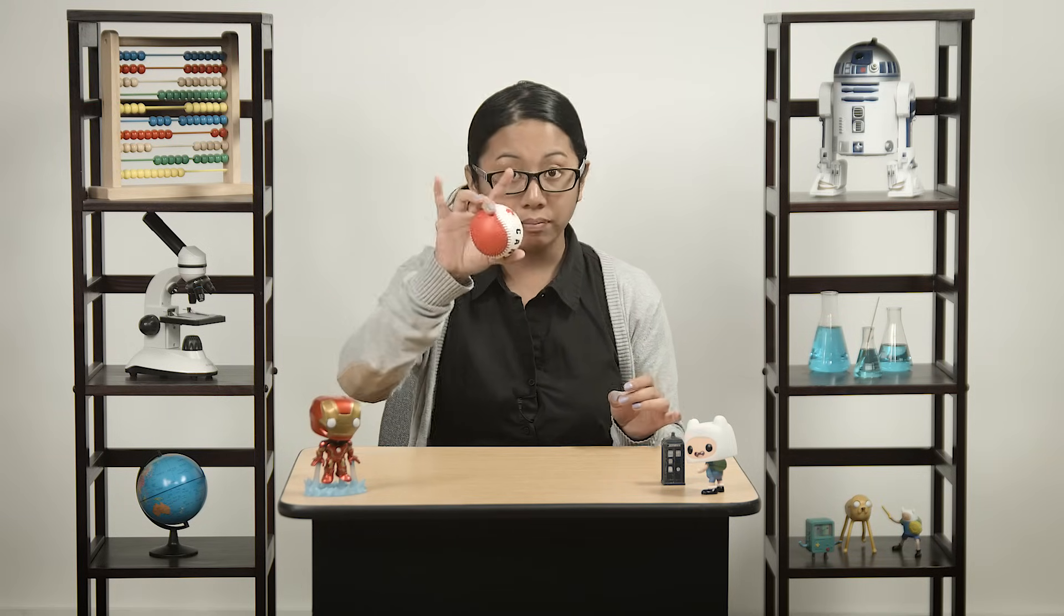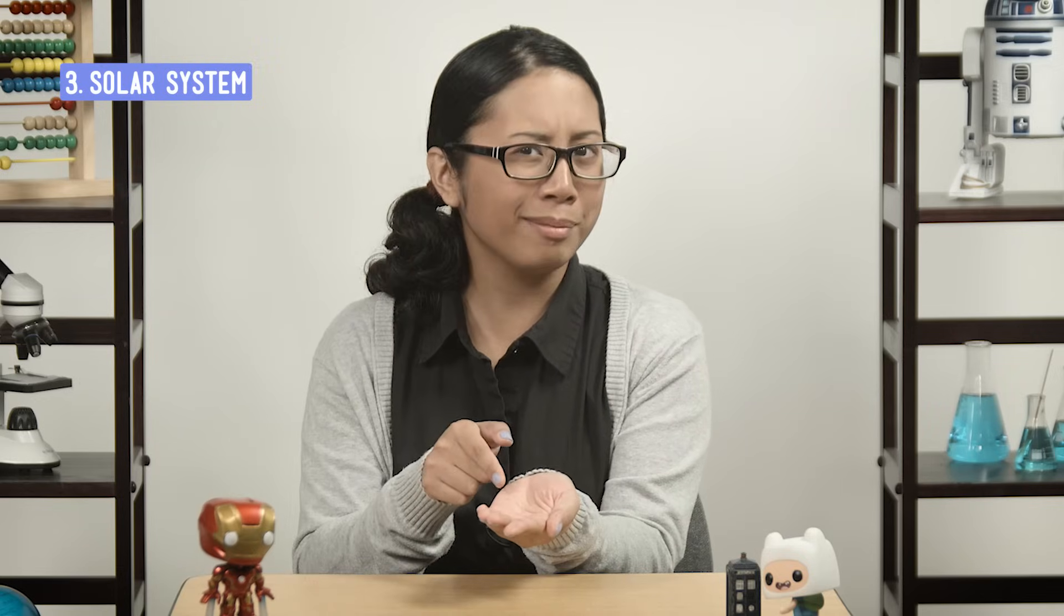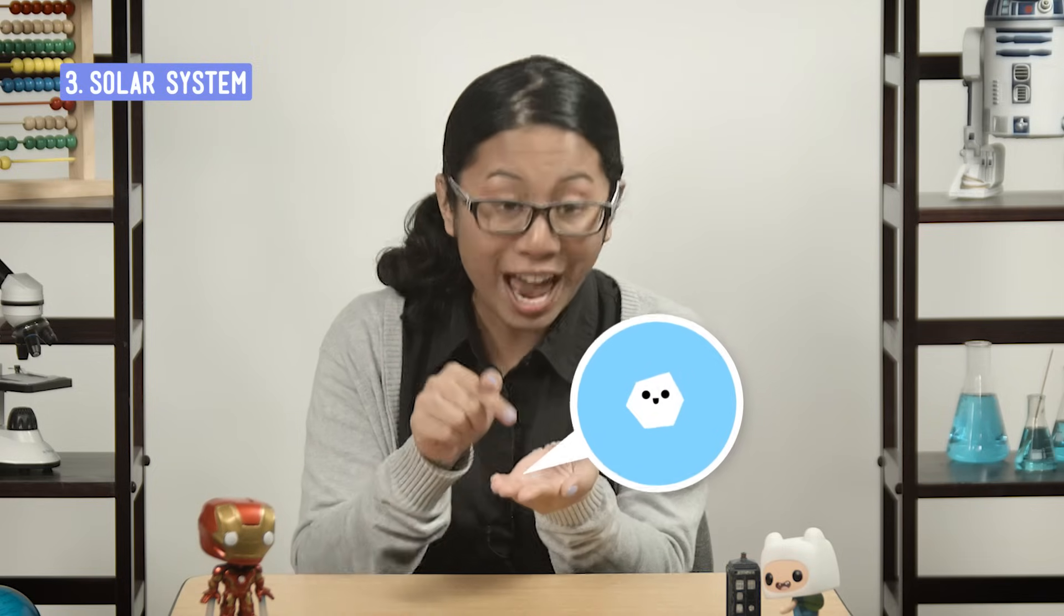If the sun were the size of this room, the Earth would be about this big. Okay, not too crazy. Now imagine our whole solar system were the size of this room. This would be the sun. Don't see anything? That's because it's just a grain of salt.